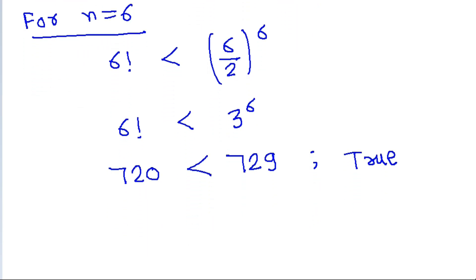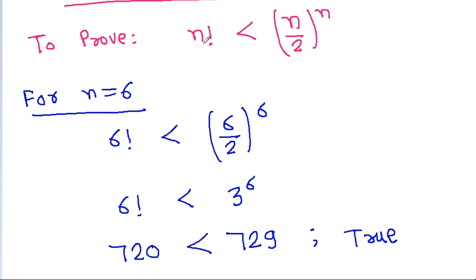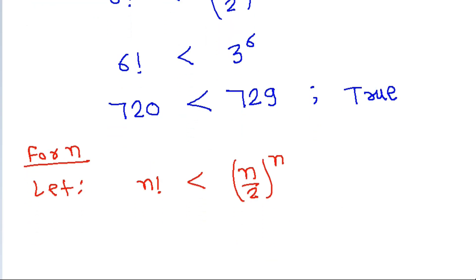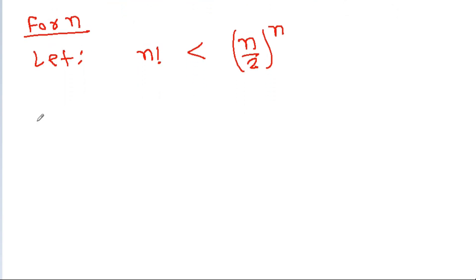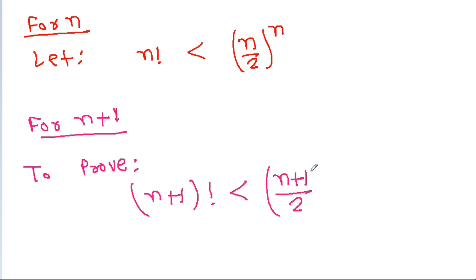The second step: we assume for some n that n! < (n/2)^n. The third step: for n+1, we have to prove that (n+1)! < ((n+1)/2)^(n+1).